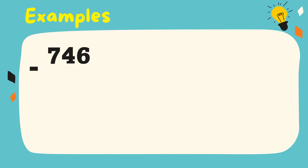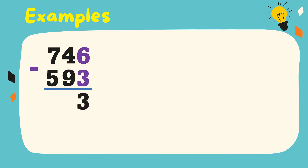Let's study the following examples on how to subtract whole numbers. 746 minus 593. We subtract from right to left. 6 minus 3 is equal to 3. 4 minus 9 cannot be, so we borrow 1 from 7. 7 becomes 6.